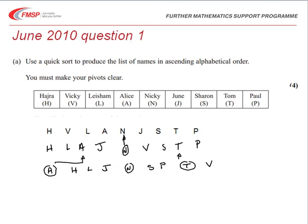Our pivots now are L, centre of these three, P and V. So in the next line we're going to have A is fixed, L is fixed, N, P, T and V are all fixed.